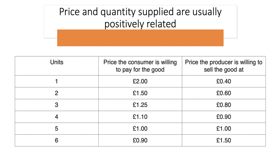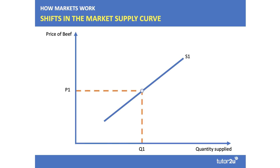As the units go up, we assume diminishing marginal utility — the price the consumer is willing to pay for the good diminishes. The equilibrium here is at five units, where the price is £1.00. Here is a standard linear, upward sloping supply curve for a product — in this case, the supply of beef at changing price levels.